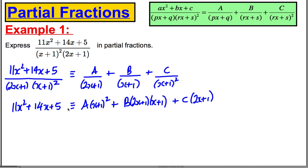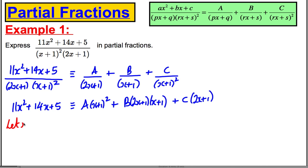So we have 11x² + 14x + 5 and let's do some substitutions. If I let x equal negative one, the left side turns out to be two. The A and B terms disappear, and this here turns out to be negative two plus one, which is negative C. Therefore, C must be negative two.